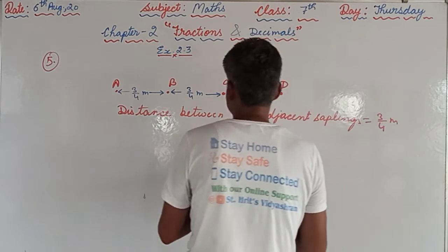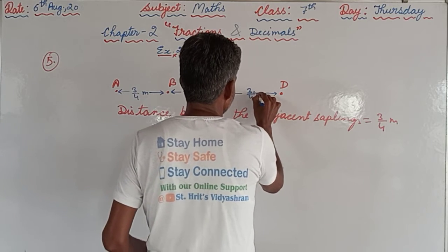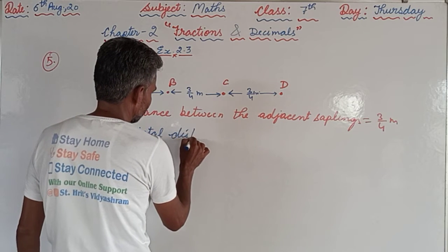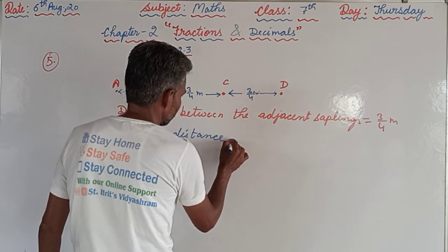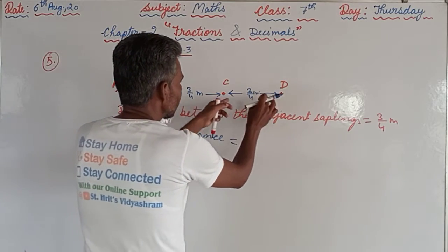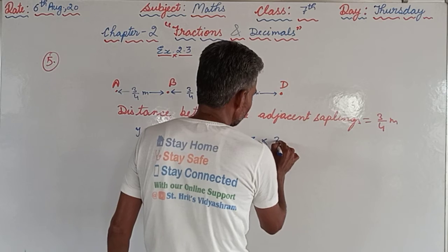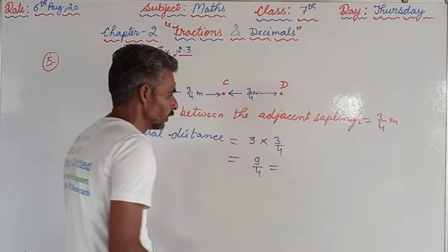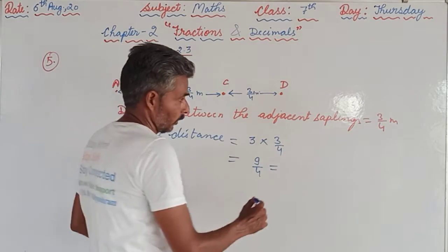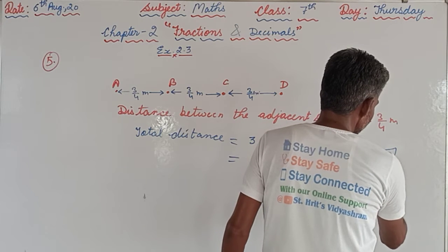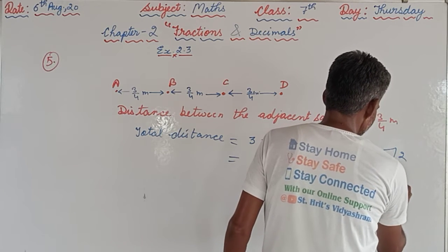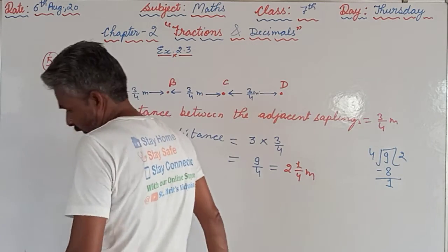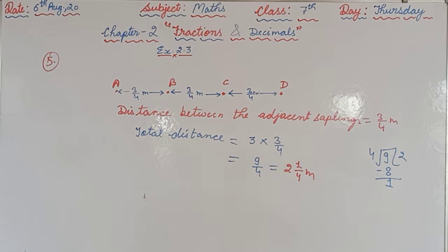So the total distance: how many gaps are there? One, two, and three — that means three times three-fourths. Three threes are nine, so nine by four. We will reduce this improper fraction into a mixed fraction. Nine divided by four: four twos are eight, remainder one. So the mixed fraction will be two and one-fourth meters.